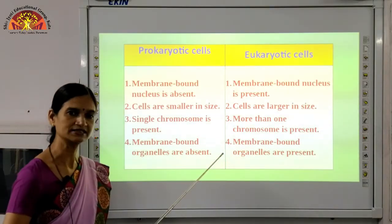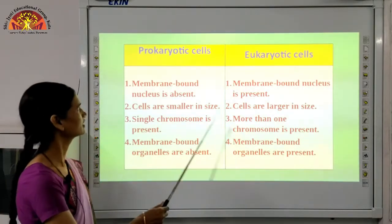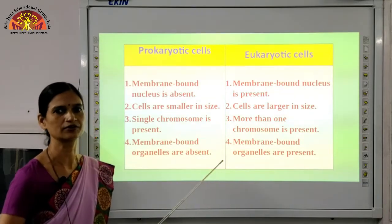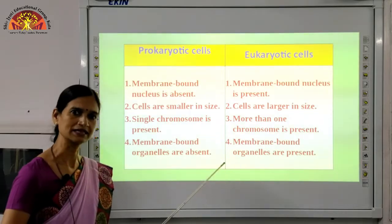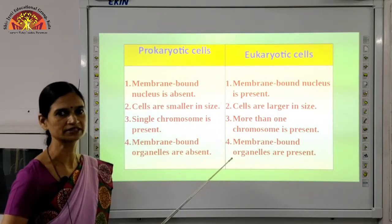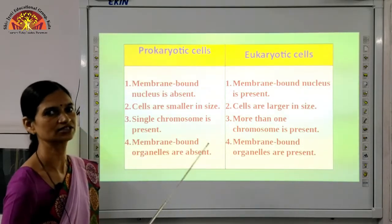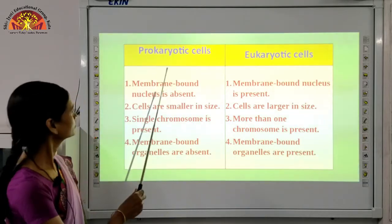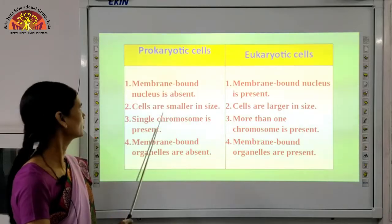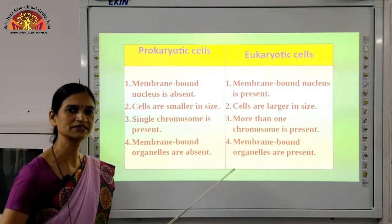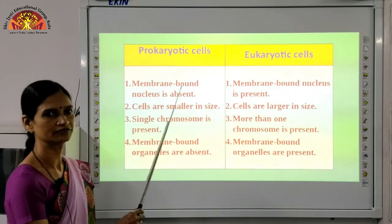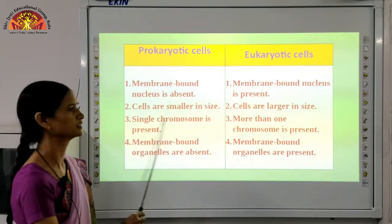Now we will see the differences between prokaryotic and eukaryotic cells. Cells formed earlier in the origin of life are called prokaryotic cells — these are primitive, less advanced cells. Prokaryotic cells do not have a membrane-bound nucleus. Their nuclear material is spread throughout the cell — there is no boundary of the nucleus. So we say membrane-bound nucleus is absent in prokaryotic cells.